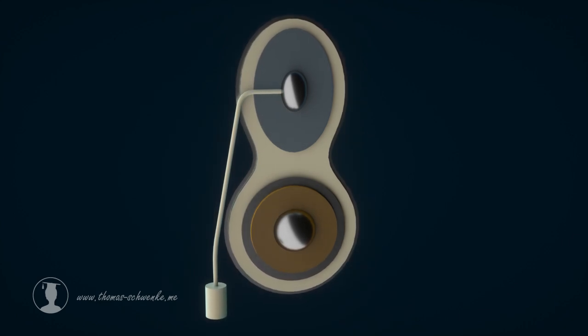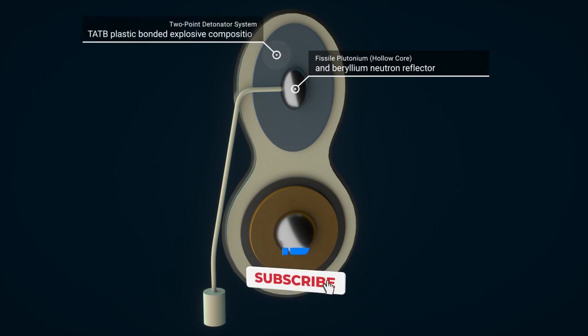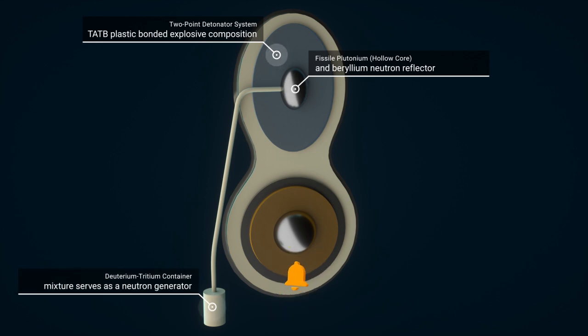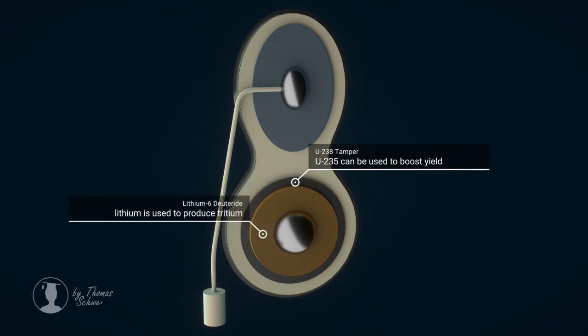The fission stage has a hollow plutonium core. Conventional explosives are used to compress the plutonium. In addition, a container is attached which produces a gaseous deuterium-tritium mixture in the hollow plutonium core before the explosion. This mixture serves as a neutron generator. The fusion stage has a uranium-238 shell. There is also a layer of lithium and deuterium. A uranium-235 core, which can also be filled with lithium and deuterium, is also part of the fusion stage.